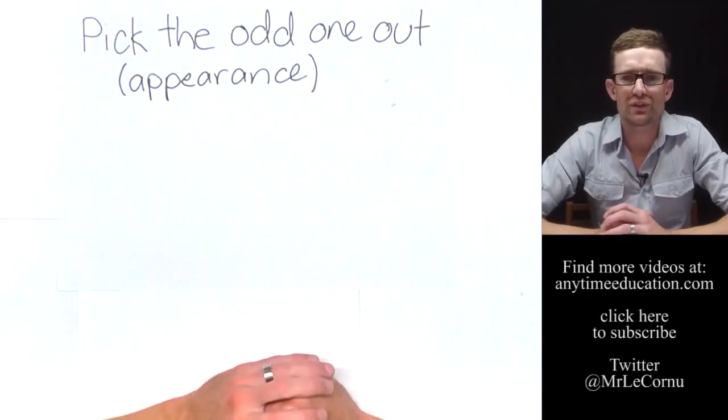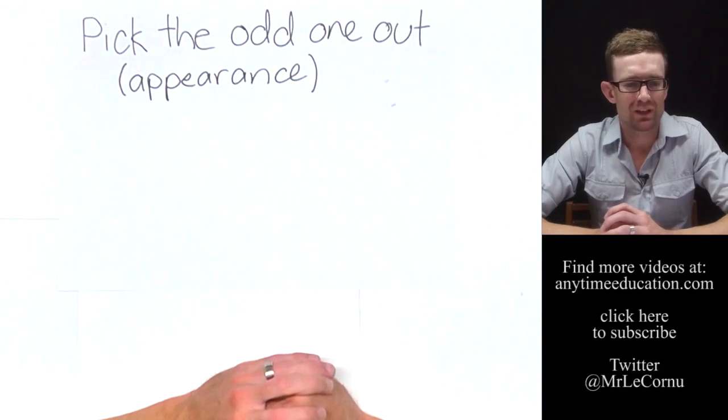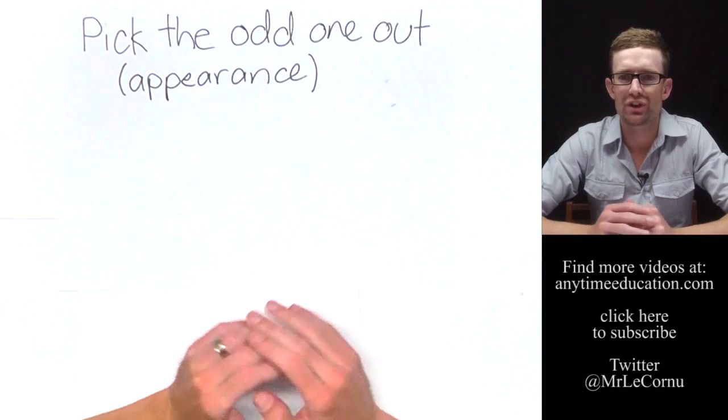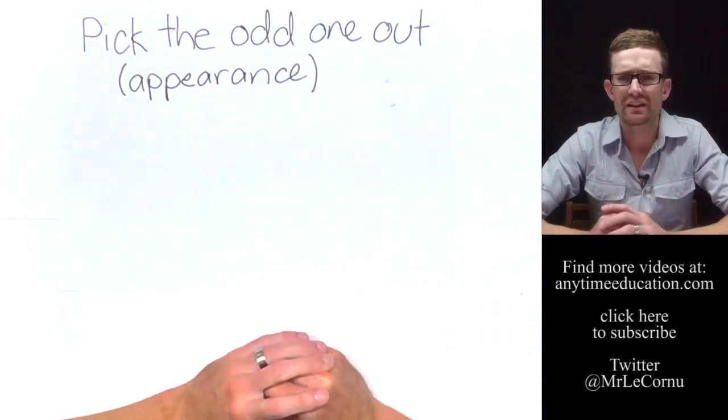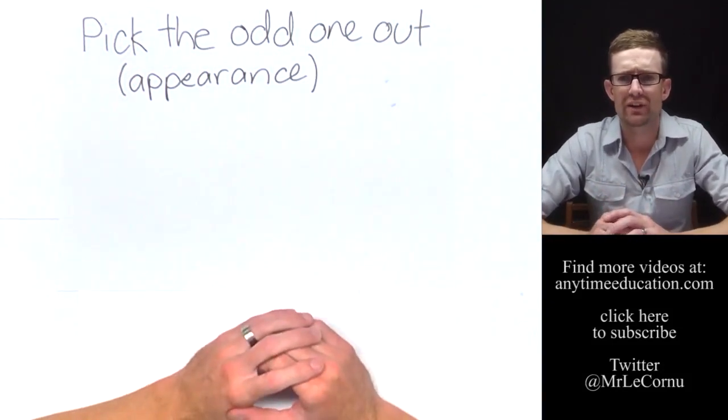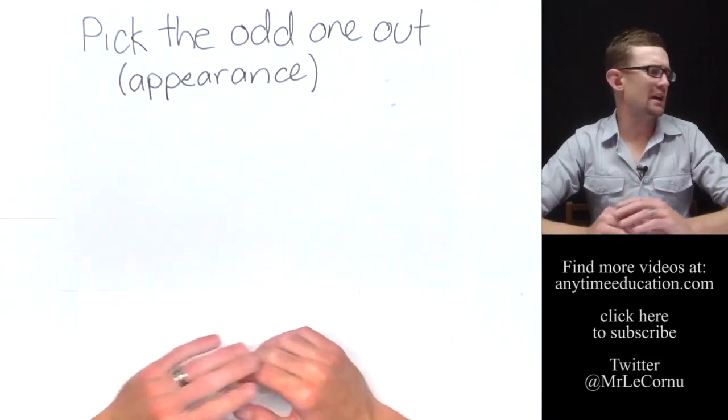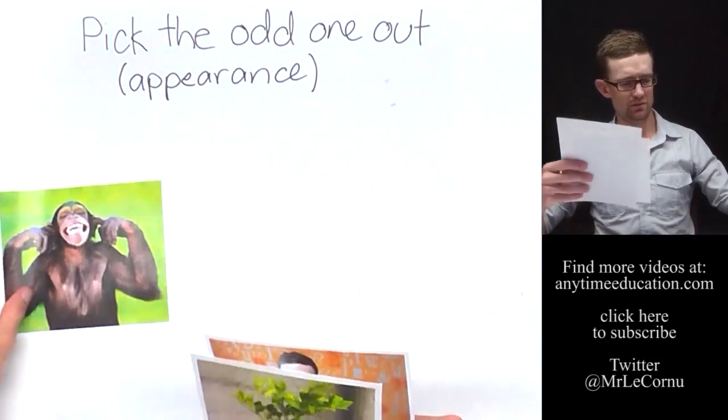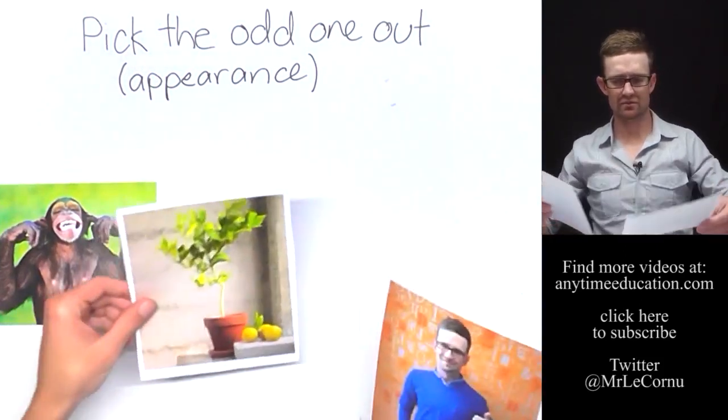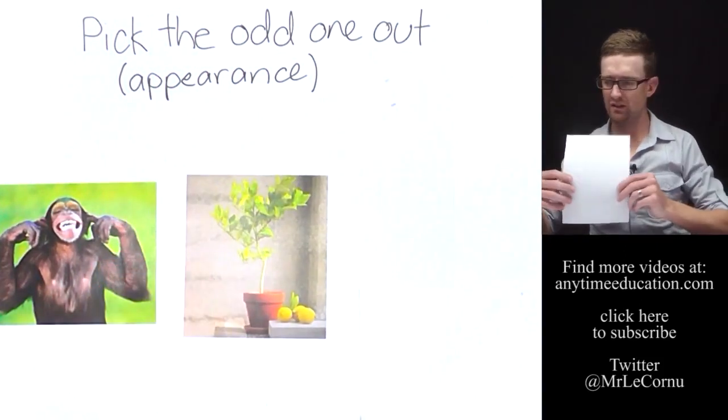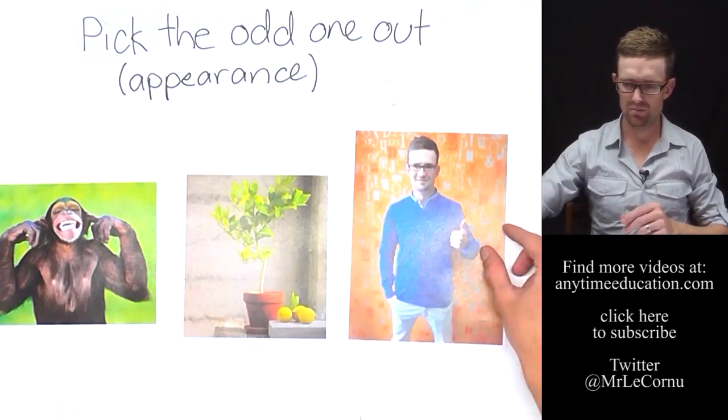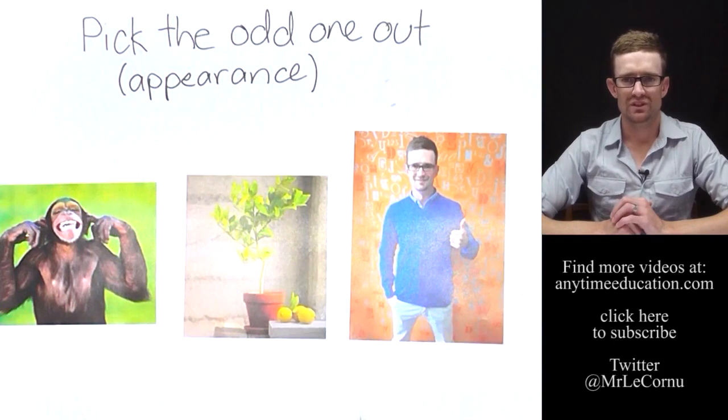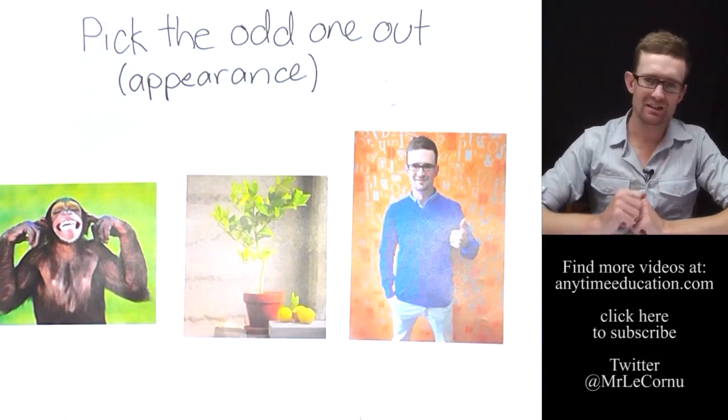Well to start off this lesson I want to play a game. The game is called Pick the Odd One Out, and I'm going to show you three different species and I want you to look at their physical appearance characteristics and try and work out the odd one out. Let's start with chimpanzee, lemon tree, and me, human. Okay, yes, lemon tree.